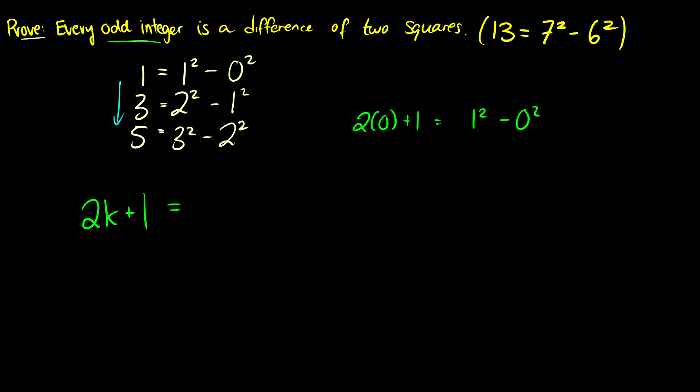Well 1 equals 2 times 0 plus 1 and that equals 1 squared minus 0 squared. How do we write 3? Well this is 2 times 1 plus 1 and this was equal to 2 squared minus 1 squared. Let's do one more. 5 is written as 2 times 2 plus 1 and this is 3 squared minus 2 squared. Do we see anything here that we can use?